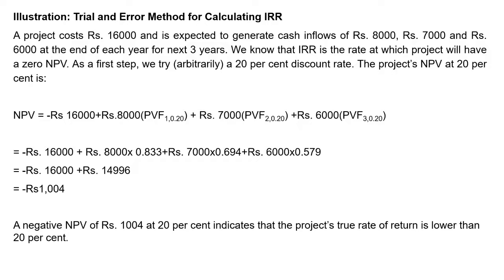We have invested in this project for 3 years. The uneven cash flows are 8,000, 7,000, and 6,000, and the cash outflow — our investment — is 16,000. We know that the IRR is the rate at which the NPV of the project is zero — where the company is at no profit, no loss. So, using trial and error, we first arbitrarily try a 20% rate of return. If we discount our cash flows at 20%, what will be our NPV?